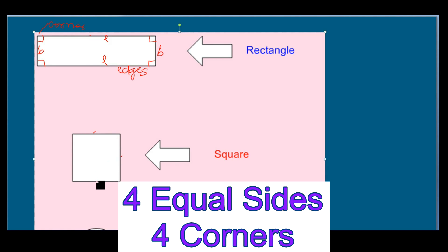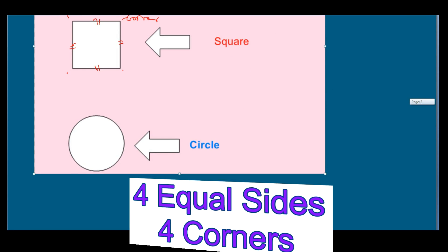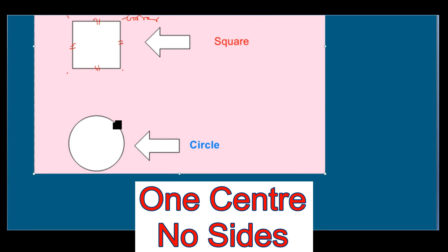Similarly, a square has four edges and four sides — one, two, three, four — and four corners. The difference between a square and a rectangle is that a square's four sides are all equal, whereas in a rectangle the sides are not all equal: only the lengths are equal to each other and the widths or breadths are equal.